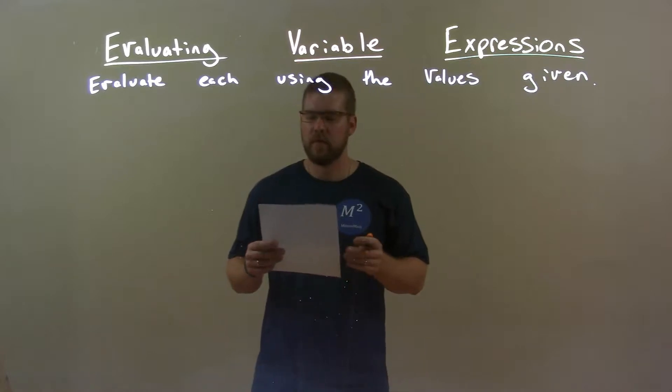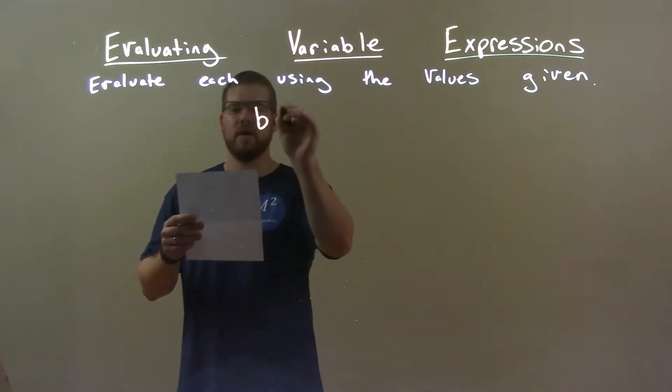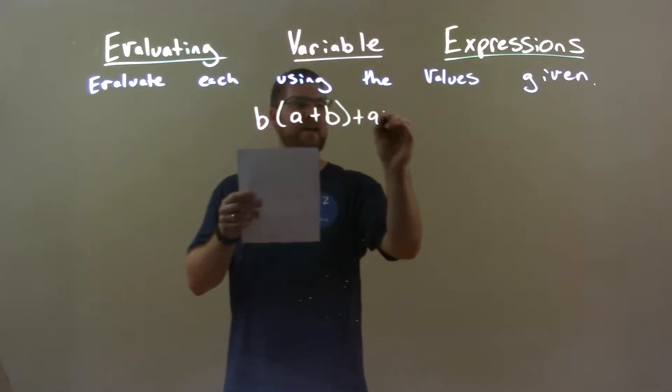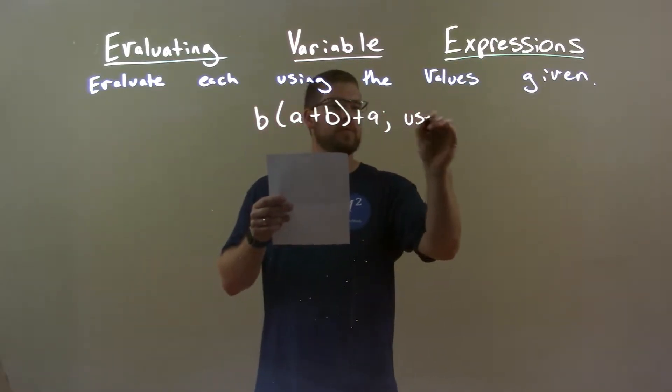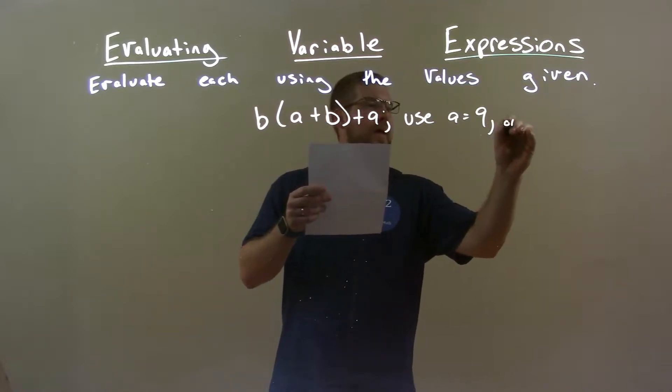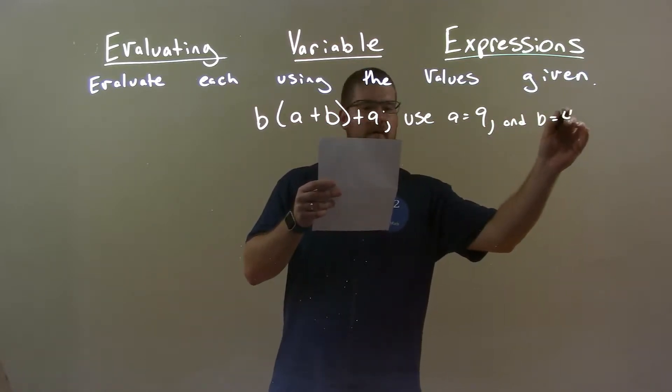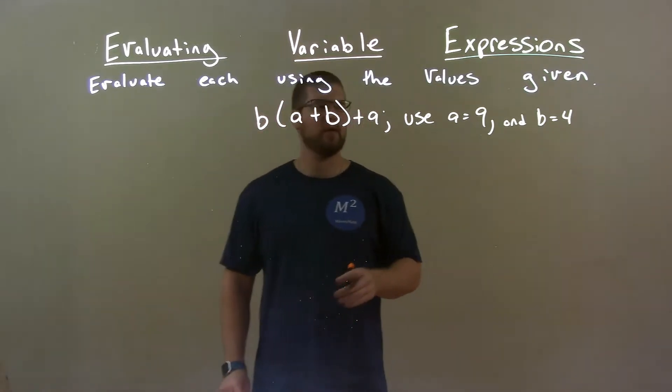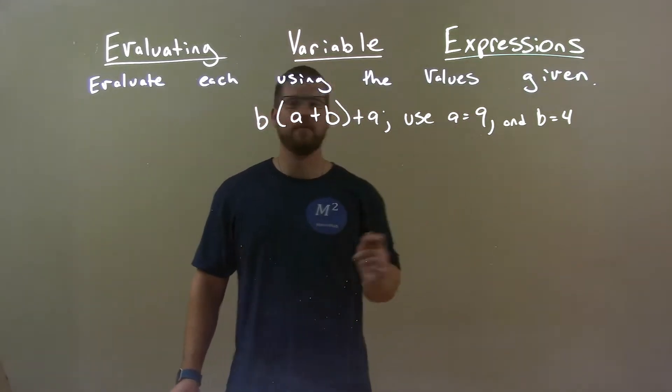So if I was given this expression B times the quantity A plus B, plus A, we're going to use A equals 9 and B equals 4. First step: substitute our values in, A for 9 and B for 4.